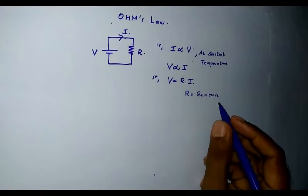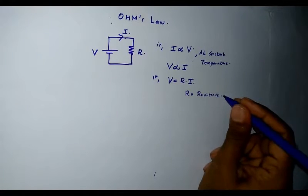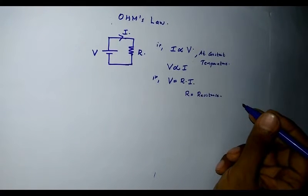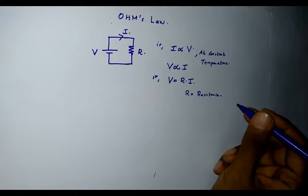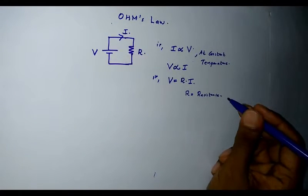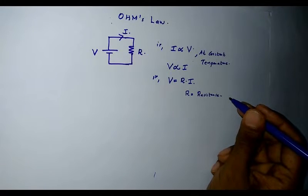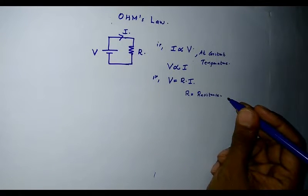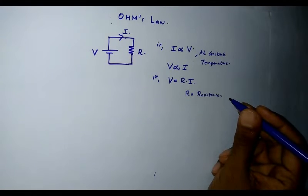R is the resistance of the material and it is constant for different materials. Since R depends upon the value of the temperature, or R is dependent on the current temperature, Ohm's Law is valid only at a specific temperature. That is, Ohm's Law states that at constant temperature the current flowing through a conductor is directly proportional to the potential difference across its ends.